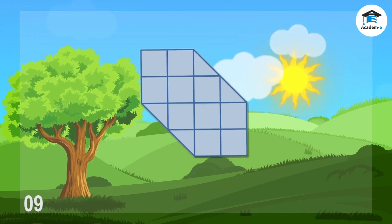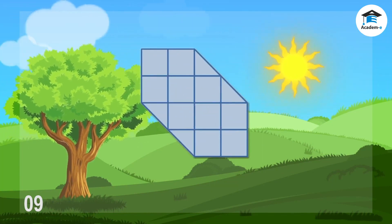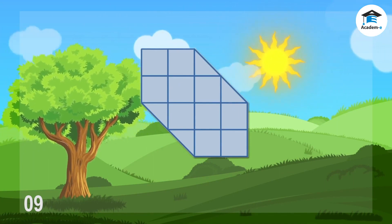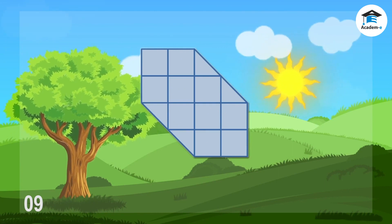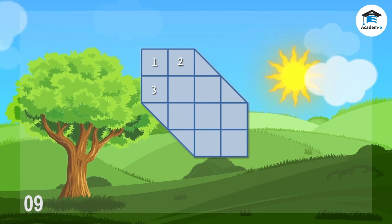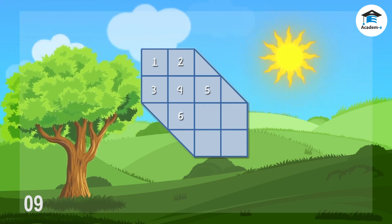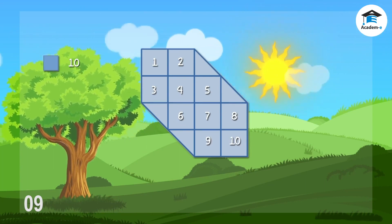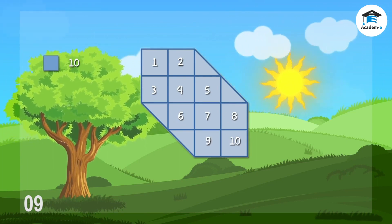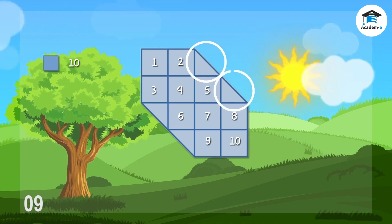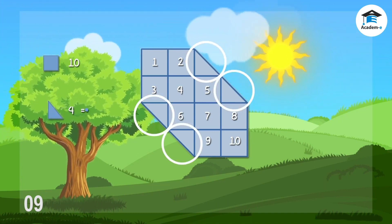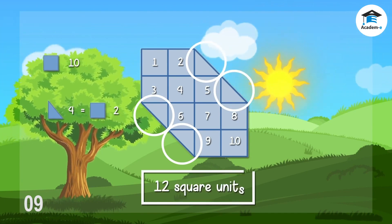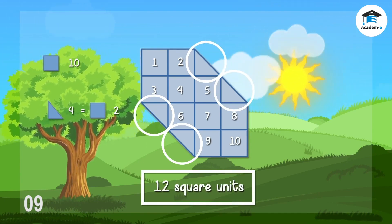Let's have an example. Look at the figure below and observe it first. How many squares are there, and how many triangles are there? Let's count the squares: one, two, three, four, five, six, seven, eight, nine, ten — there are ten squares. Now the triangles: one, two, three, four — there are four triangles. If we merge the four triangles, we have two squares. In total, the area of this figure is twelve square units.